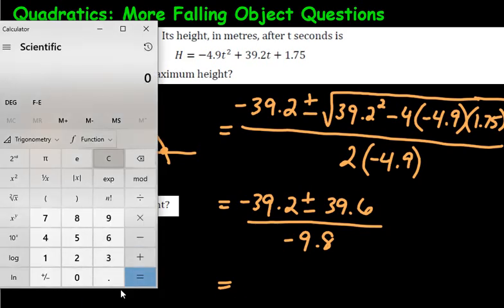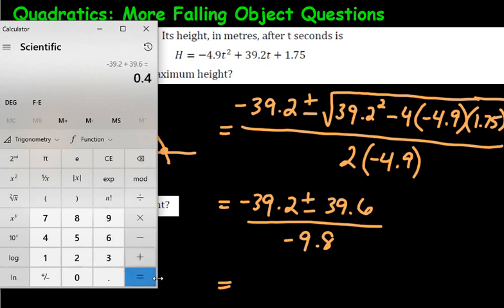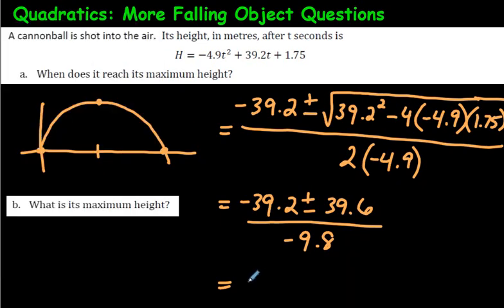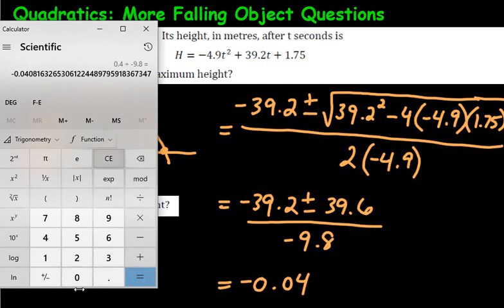For the first answer, using the plus: negative 39.2 plus 39.6 equals 0.4, divided by negative 9.8 gives approximately negative 0.04. That would be just slightly to the left of zero on the graph — meaning the cannonball is being shot from slightly above ground level, which makes sense since cannonballs usually aren't fired from ground level.